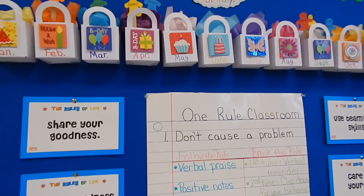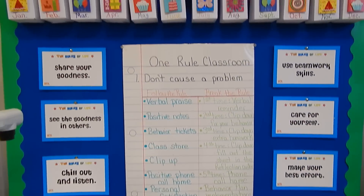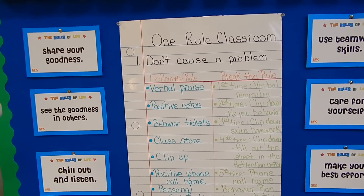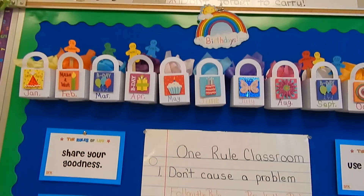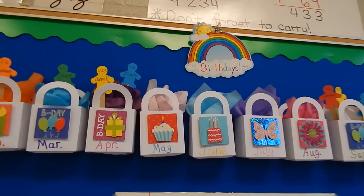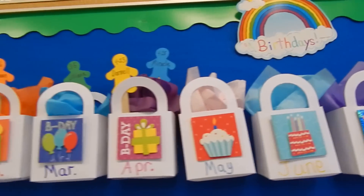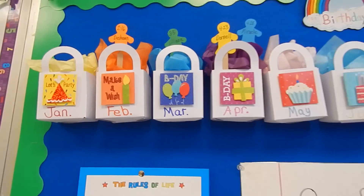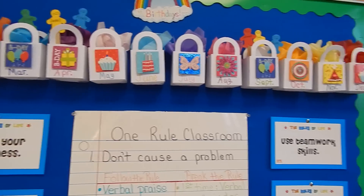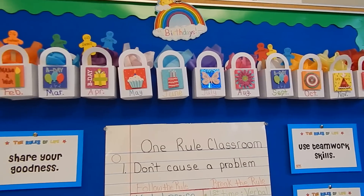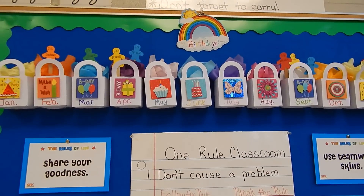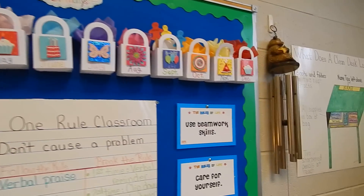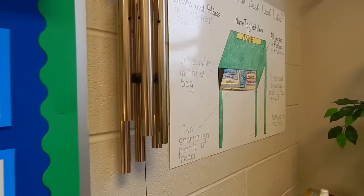On this bulletin board I have the classroom rules and the consequences. Right above, I have the children's birthdays. I started putting in some of their names just so I can remind myself when their birthday is, because I like to give them a little trinket, a certificate — something to make them feel special. I also have chimes.